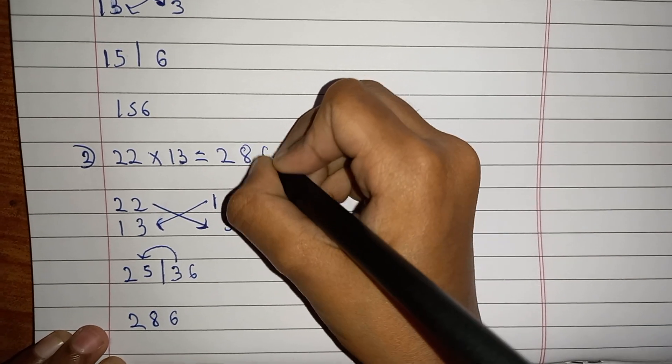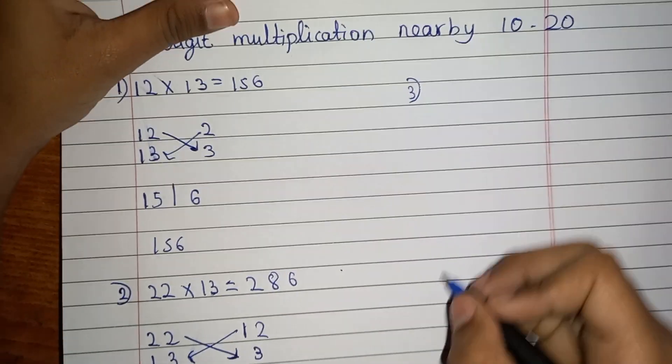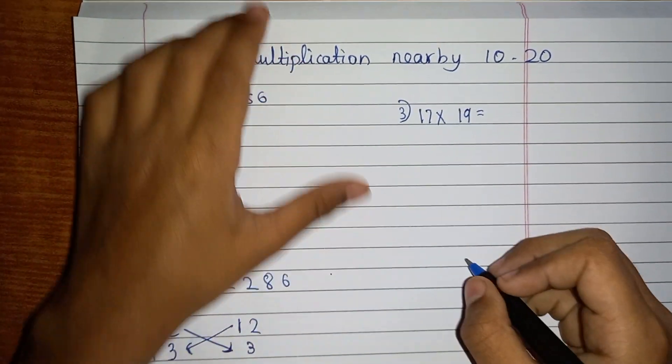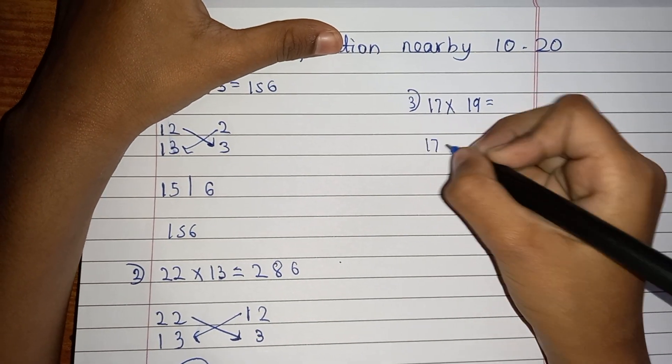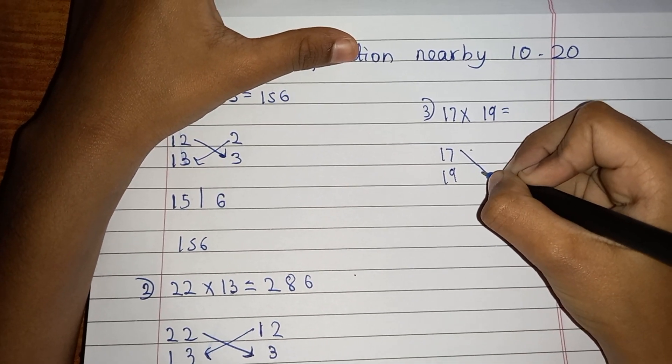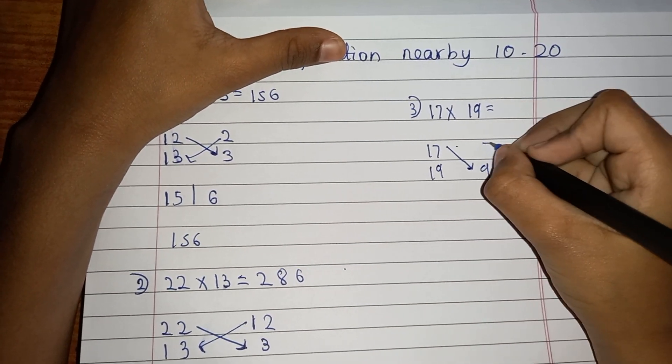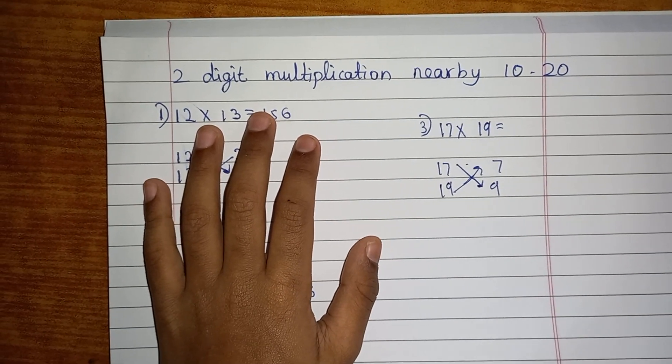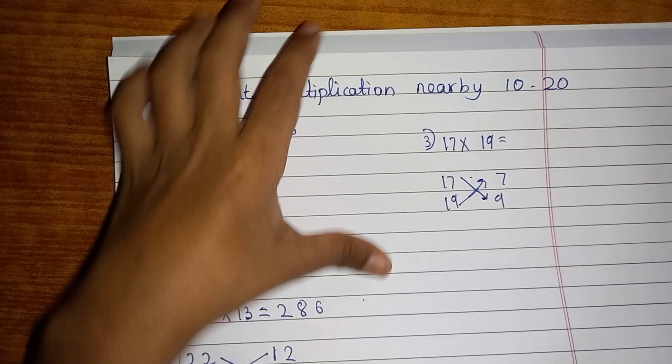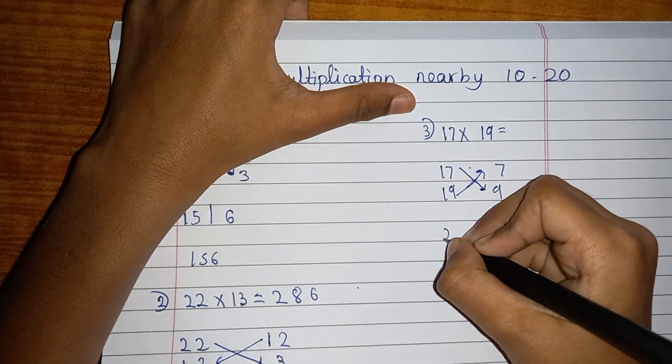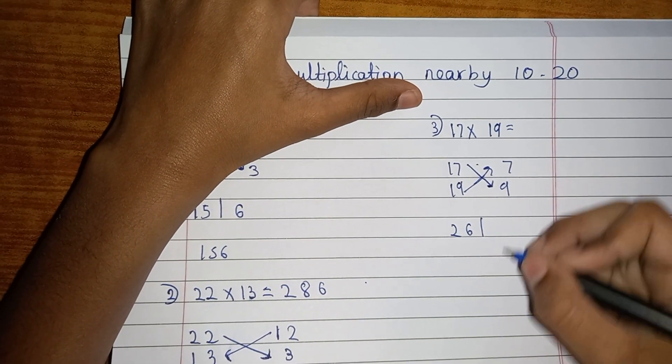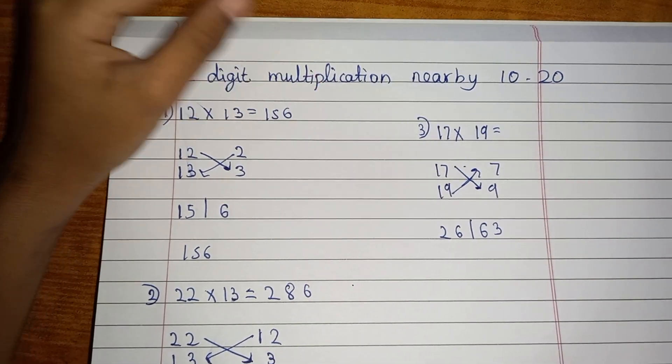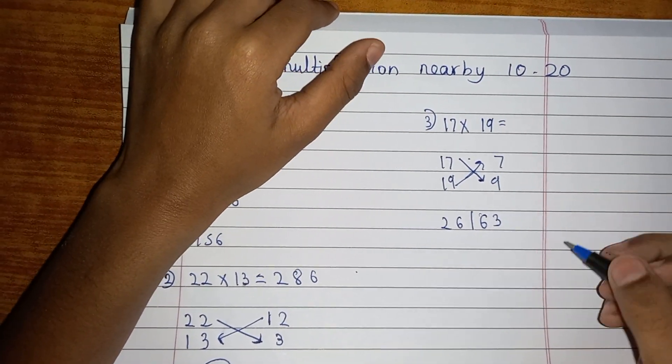Let's go with another example which is 17 multiplied by 19. First you have to write 17 here, then 19 here, then 9 here, then 7 there. Adding them gives 26, so write 26. Then 7 times 9 is 63. But there's a twist, there's again 2 digits.